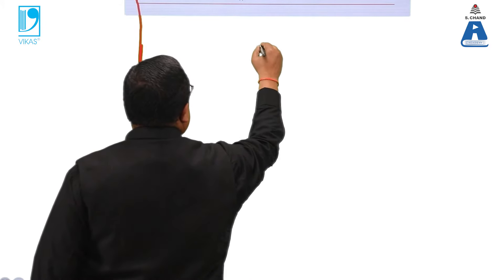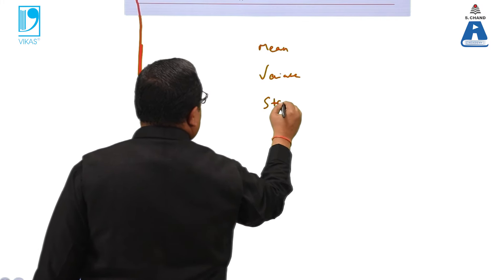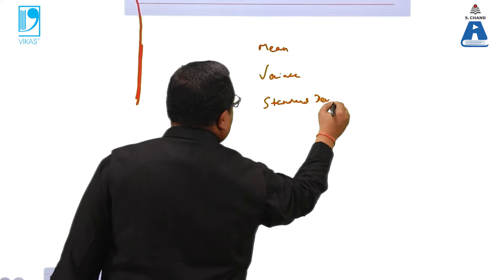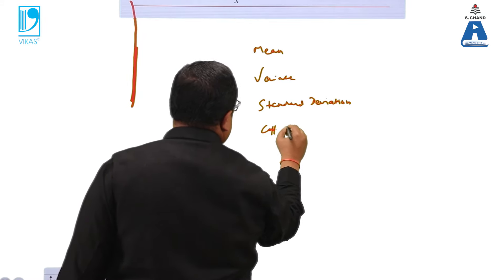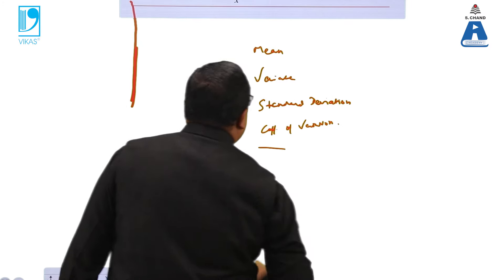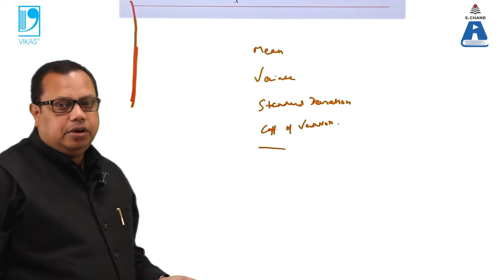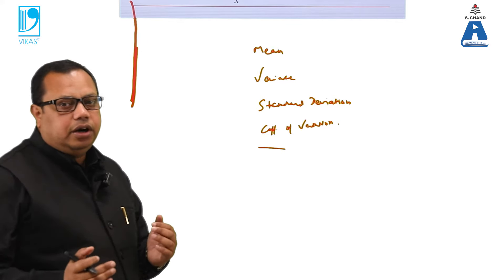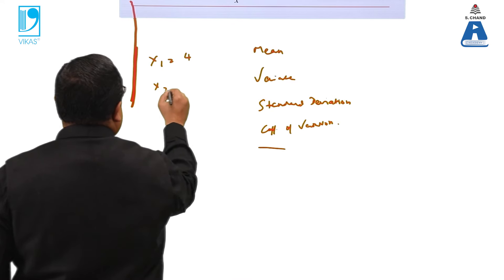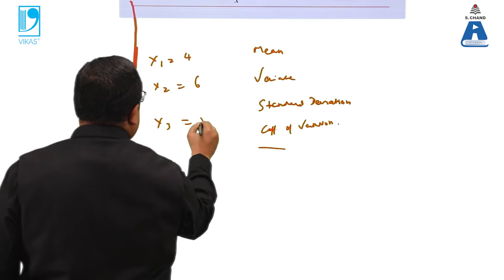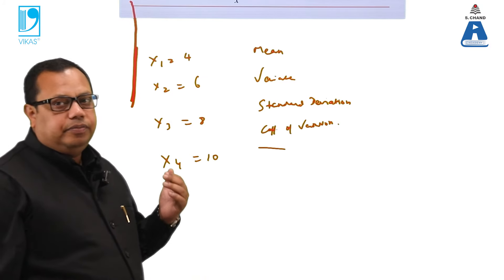Let's take an example. We have a dataset and we need to calculate the mean, variance, standard deviation, and coefficient of variation. Suppose the data is: X1 = 4, X2 = 6, X3 = 8, and X4 = 10.